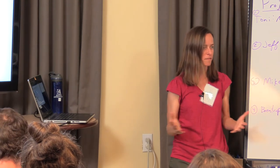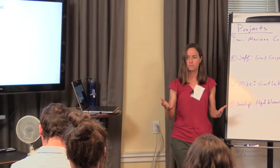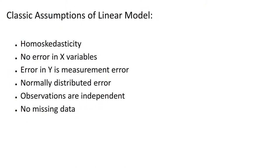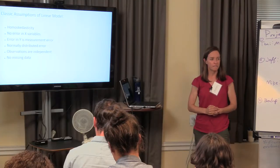We have some classic assumptions whenever we're learning about statistics throughout much of our training, and for many people still whenever you're doing statistical inference. Homoscedasticity — so our variance is constant across time. The x variables, the predictor variables, are in fact not variables — there's no error in them. All your error is in y, generally crunched into the measurement error, so your residuals are things you just didn't count right. We generally assume that's symmetric about the mean, it's normally distributed. Observations are independent, and you don't have missing data.